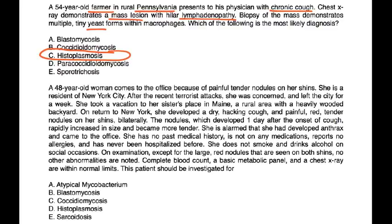Next one: A 48-year-old woman comes to the office because of painful tender nodules on her shins bilaterally. The nodules, which developed one day after the onset of cough, rapidly increased in size and became more tender. She is a resident of New York City. After the recent terrorist attacks, she was concerned and left the city for a week. She took a vacation to her sister's place in Maine, who lives in a wooded area. The nodules developed one day after the onset of cough, rapidly increased in size and became more tender. She is alarmed that she had developed anthrax and came to the office. She has no past medical history, is not on any medications, reports no allergies, and has never been hospitalized before. She does not smoke, drinks alcohol on social occasions. On exam, except for the large red nodules that are seen on both shins, no other abnormalities are noted. CBC, BMP, and chest x-ray are within normal limits. The patient should be investigated for...